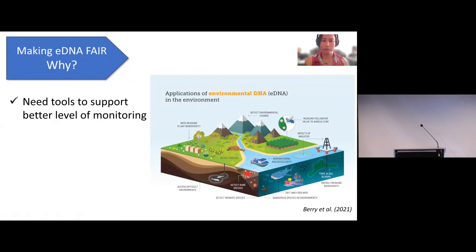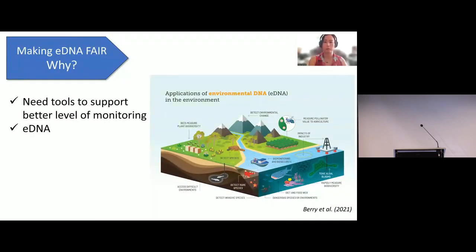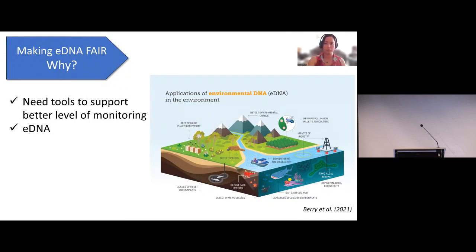Why do we need to make DNA FAIR? First of all, we need tools to support better levels of monitoring given the number of environmental stresses around the world, and eDNA is a very powerful tool for that. We collect environmental samples such as water and soil, and can simultaneously identify hundreds of species from a single sample using DNA shed into the environment. Because of its sensitivity and efficiency in detecting species, it's a really big potential source of information about species distribution.